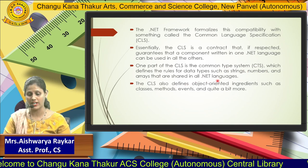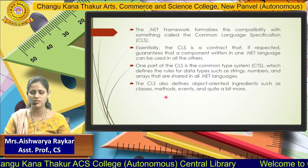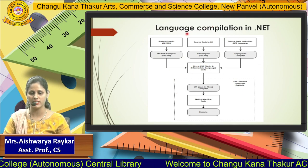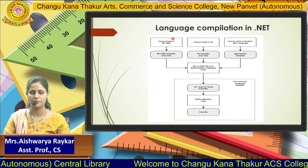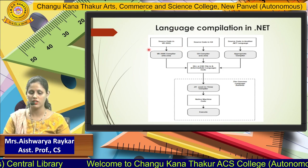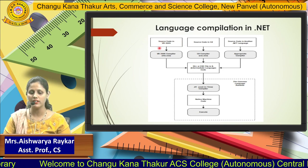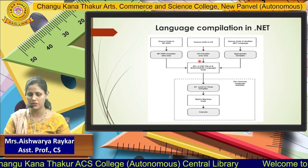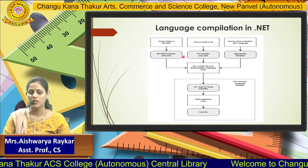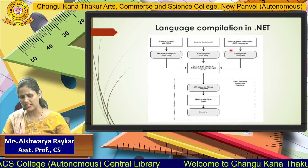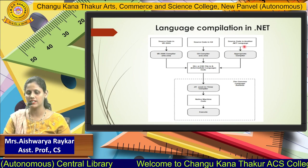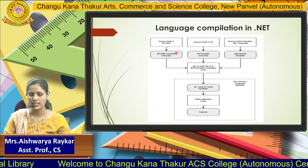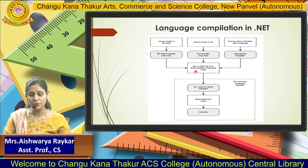CLS also defines object-oriented ingredients such as classes, methods, events and quite a bit more. So how the language compilation is done in .NET is shown in this diagram. Source code written in VB will be processed by the VB compiler. If the source code is in C-Sharp then it will be processed by the C-Sharp compiler. If the source code is in any other .NET language then the appropriate compiler will be used. Then it will be passed to the Intermediate Language code.